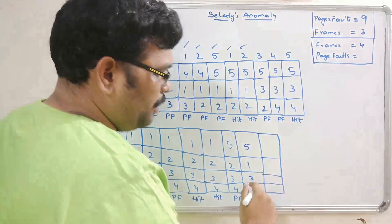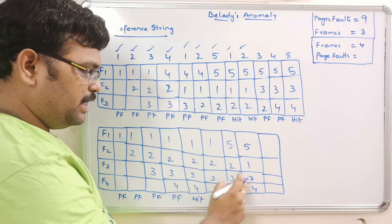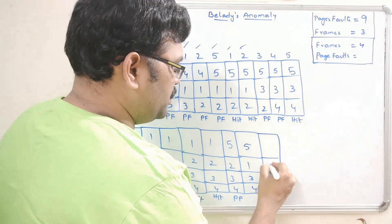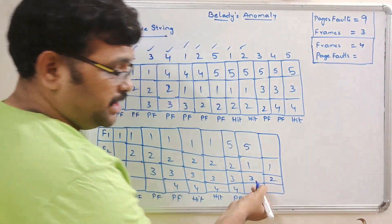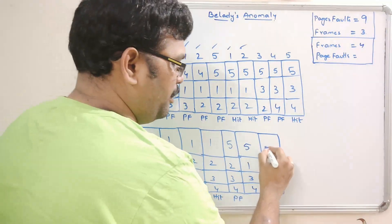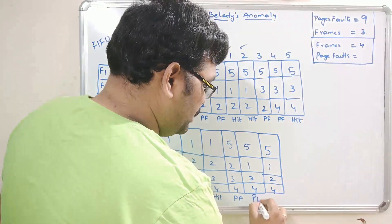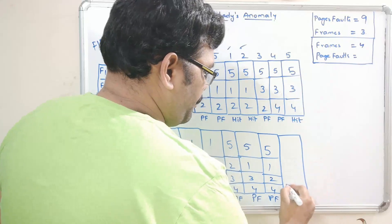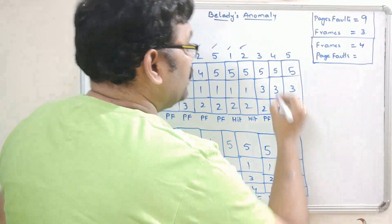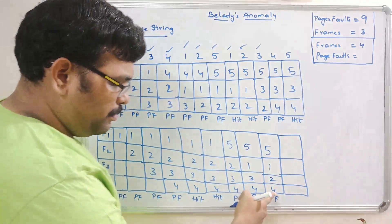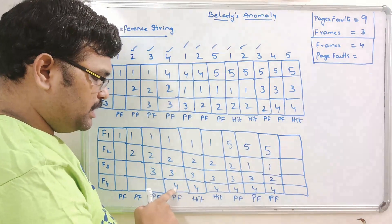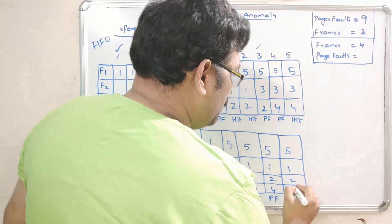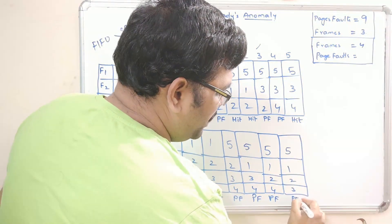Page 2 is not available — page fault. Among the frames 5, 1, 3, 4, page 3 is the next in FIFO order, so page 3 is swapped out and page 2 is swapped in: frames become 5, 1, 2, 4. Page 3 is not available — page fault. Page 4 is the oldest now, so page 4 is replaced with page 3.